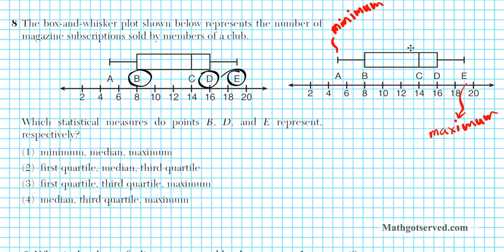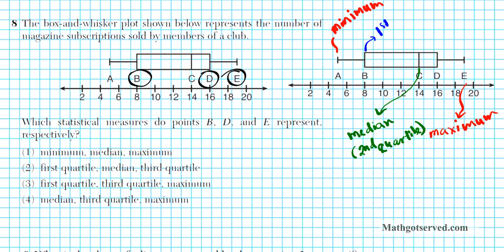In the box, there are five points total. The middle point between the box boundaries is known as the median — essentially the second quartile. The left boundary of the box is the first quartile, and the right boundary is the third quartile. So point B is the first quartile and that right boundary is the third quartile.